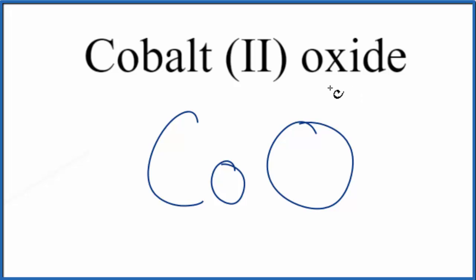That means we need to take into account ionic charge. For the cobalt, it's a transition metal, and this 2, this Roman numeral 2, tells us the ionic charge is 2 plus.